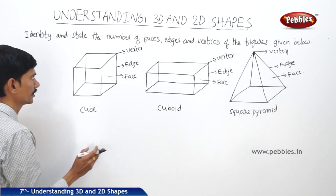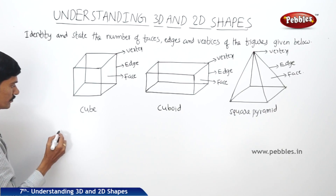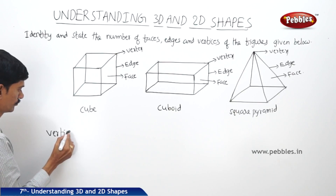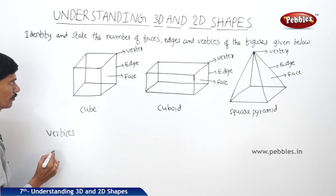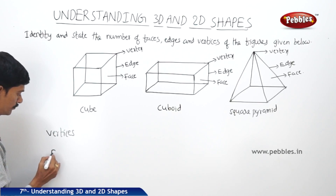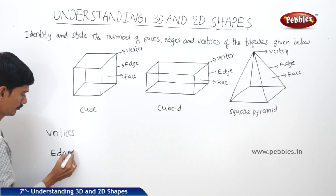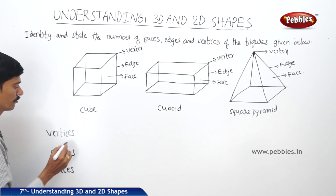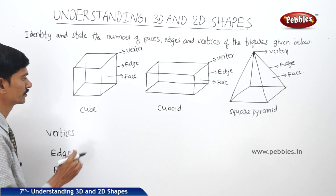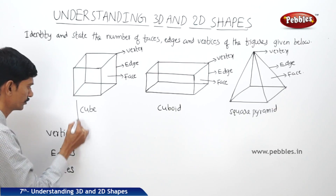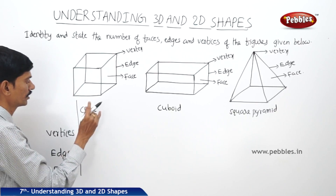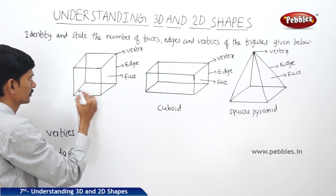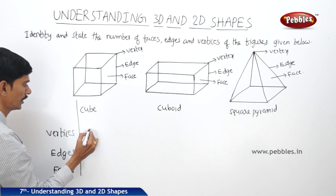Now if you find the number of vertices, the number of edges, and the number of faces for each of the following solid shapes — the first one is the cube. There are one, two, three, four, five, six, seven, eight — eight vertices.